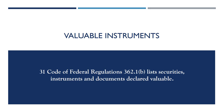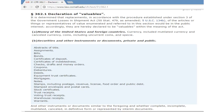Valuable instruments. Title 31, Code of Federal Regulations, Section 362.1(b) lists securities, instruments, documents declared valuable. Section 362.1, Declaration of Valuables: it is determined that replacements, in accordance with the procedure established under Section 3 of the Government Losses and Shipment Act, of the articles or things or representatives of value enumerated and referred to in this section, would be in the public interest. Accordingly, they are hereby declared to be 'valuables' within the meaning of the Act.